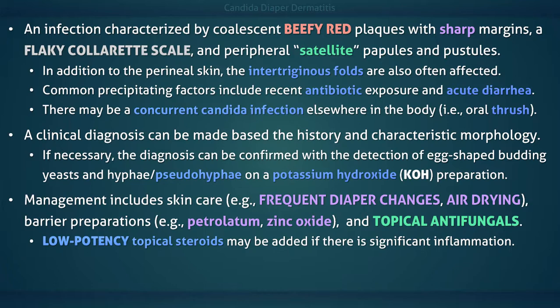If there is significant inflammation, then a short course of low-potency topical steroids may be added. Strong corticosteroids, or extended duration of steroid use beyond several days, should be avoided to prevent skin atrophy and striae.